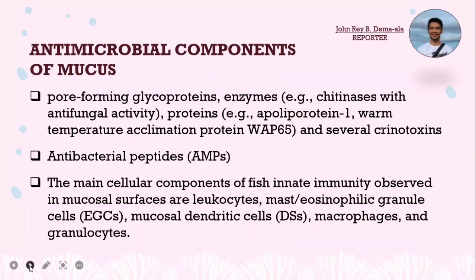Many antimicrobial molecules have been found in fish external mucus, including pore-forming glycoproteins, enzymes like chitinase with antifungal activity, proteins like apolipoprotein 1 and warm temperature acclimation protein (WAP-65), and several crinotoxins. Antibacterial peptides (AMP), which are one of the main molecules to fight pathogens, have also been observed in mucus. The main cellular components of fish innate immunity observed in mucosal surfaces are leukocytes, mast or eosinophilic granule cells, mucosal dendritic cells, macrophages, and granulocytes.